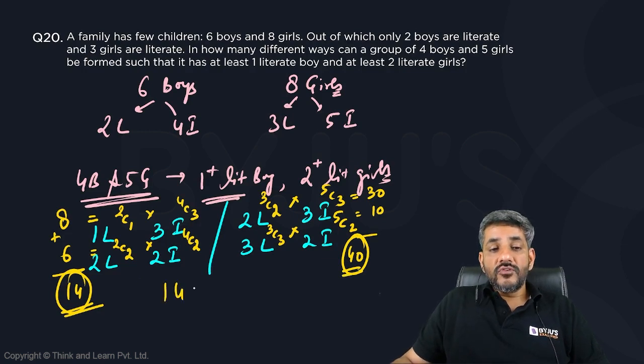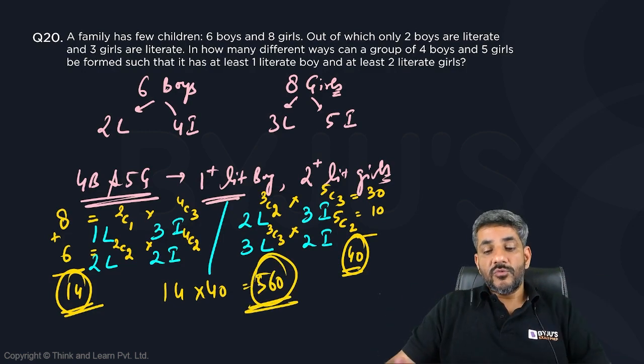So what is the total number of ways of doing this? 40 into 14. This gives me 560 as the total number of ways in which this can be done.